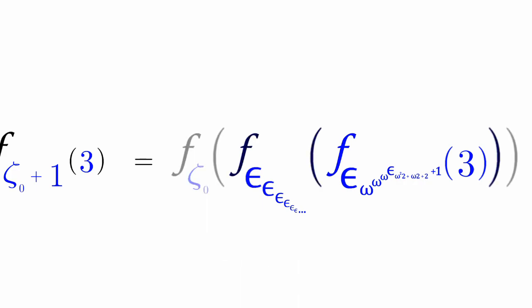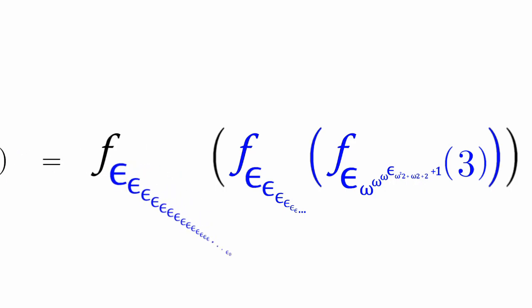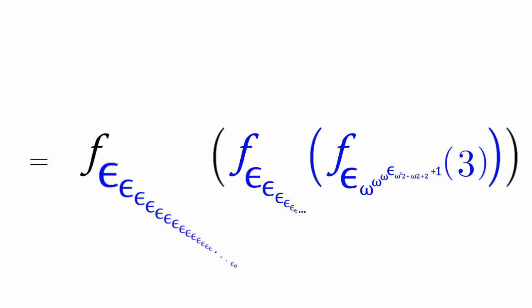Now f(ζ₀) of this whole thing — that's equal to f(ε_{ε_{ε_{…}}}) with this many epsilons.